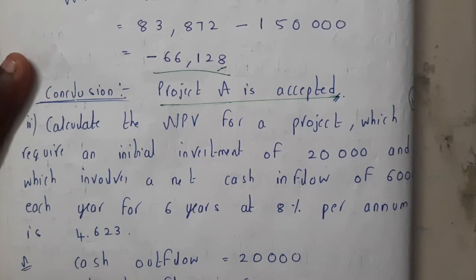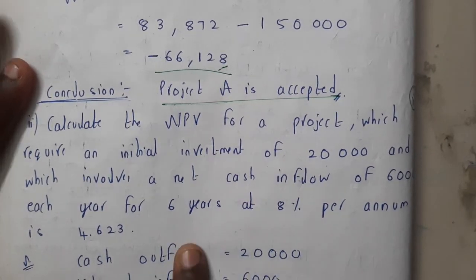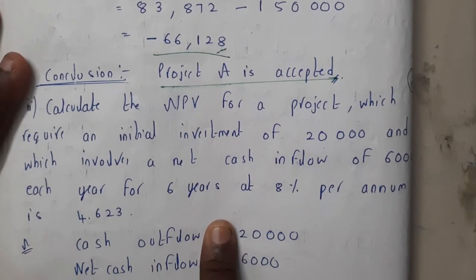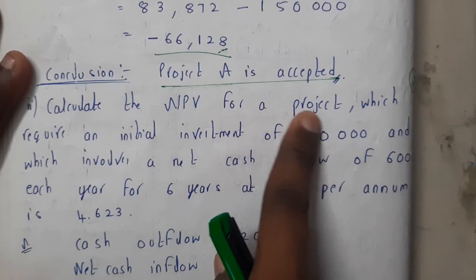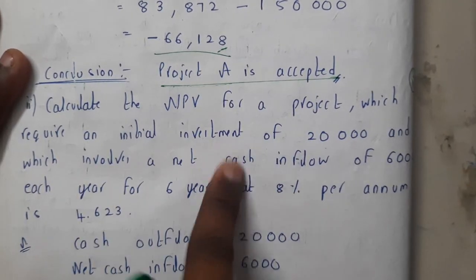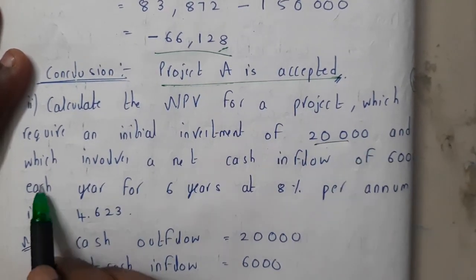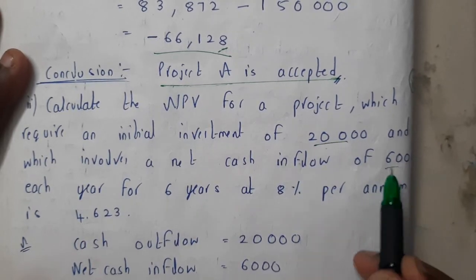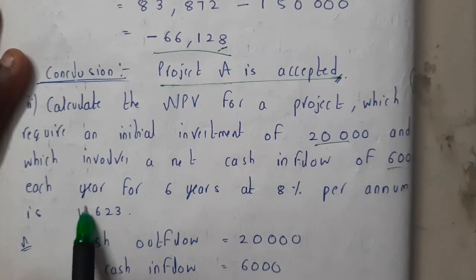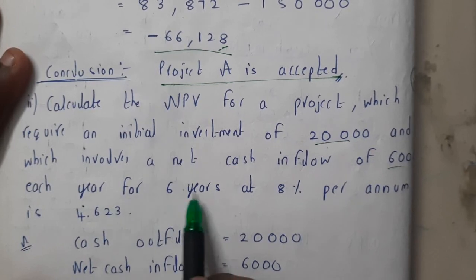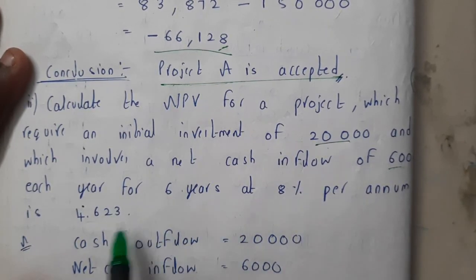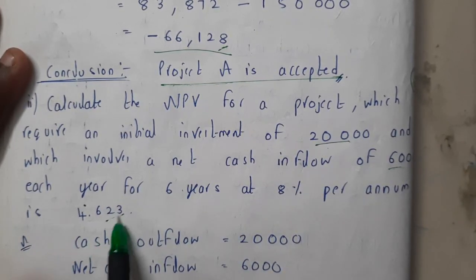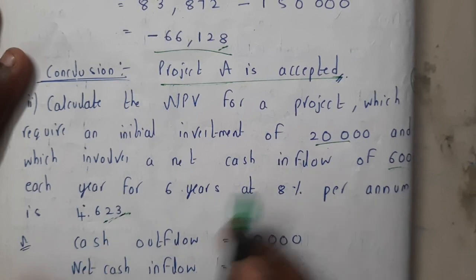Hello guys, we are back with our next lecture. In this lecture let us go through one more problem on NPV — net present value. In this question there is a small trick: calculate the NPV for the project which requires an initial investment of 20,000, which involves a net cash inflow of 6,000 per year for six years at 8 percent per annum. The annuity factor given is 4.623.